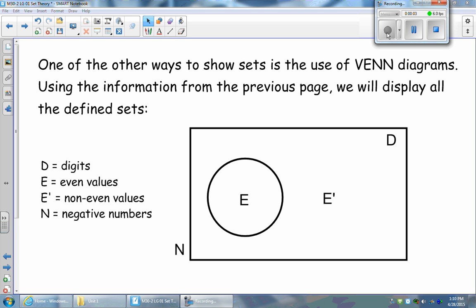One of the ways that we can show our understanding of set theory is to use Venn diagrams. So we're going to start with a Venn diagram based on the universal set D, all digits.